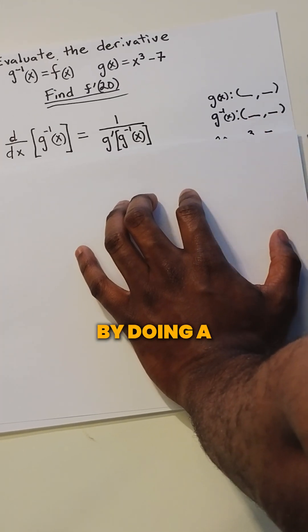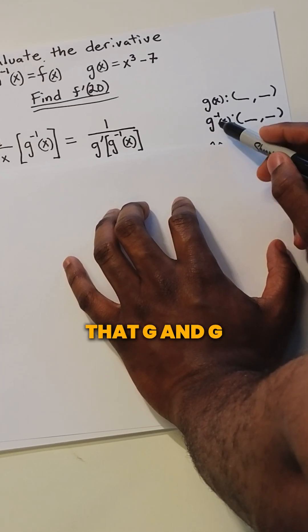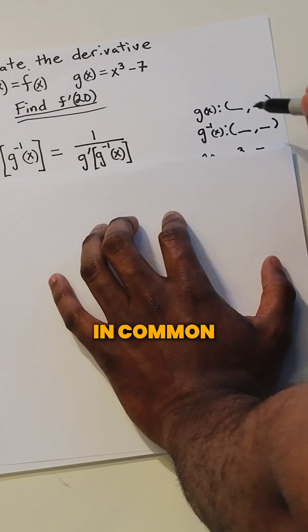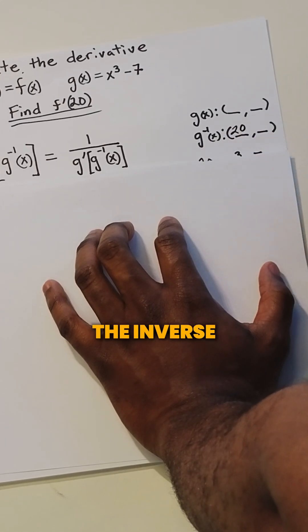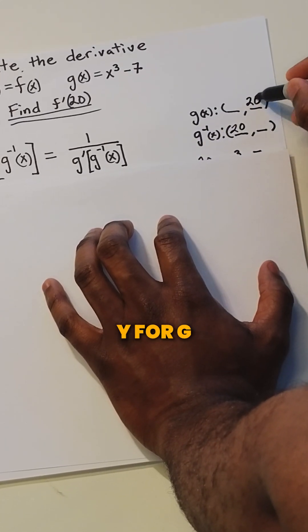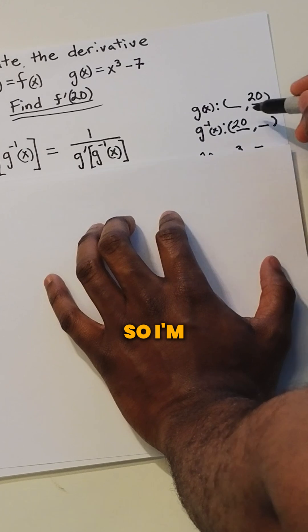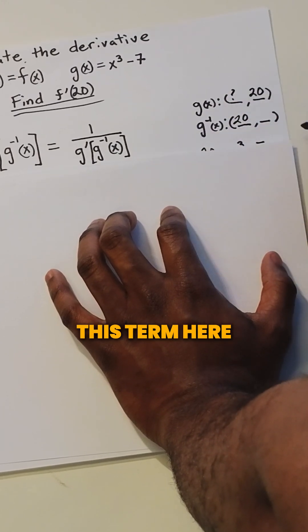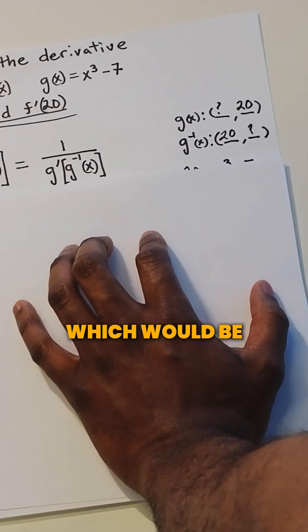I always start by doing a coordinate system here. We know that g and g inverse have something in common. Wherever I have an x for g inverse, that's going to be the y for g. So I'm looking for this term here and this term here, which would be the exact same thing.